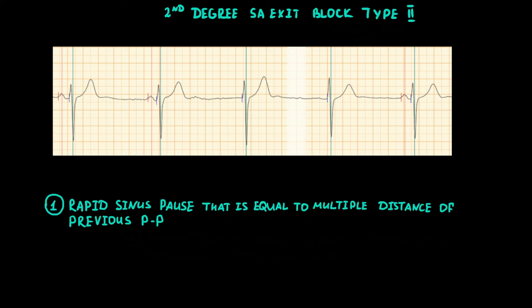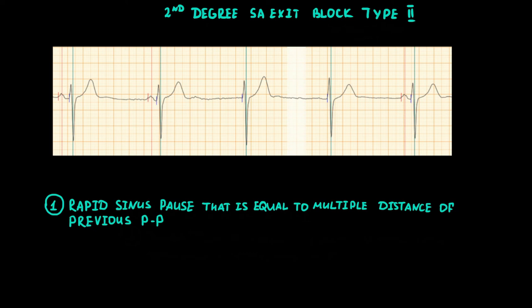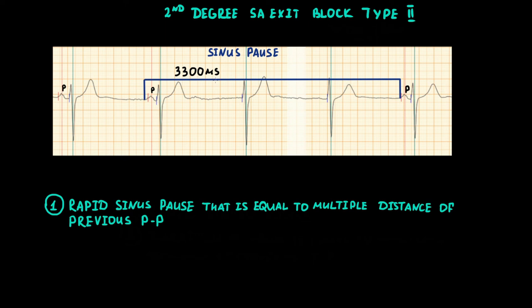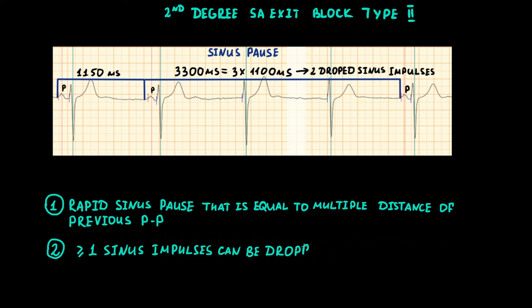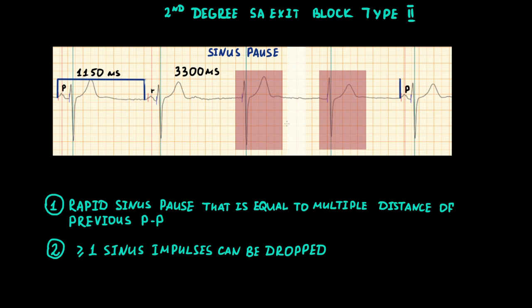Let's look at a real ECG example. We see the first two complexes with normal P-waves, followed by two complexes without P-waves, then P returns in the last complex — meaning in the middle of the strip there are no sinus complexes. The pause duration is 3300 ms; the previous PP interval is 1150 ms, so the pause is three times bigger, indicating two blocked sinus impulses. Also note the narrow QRS complexes without P-waves during the pause — these are escape AV nodal complexes arising as latent pacemaker activation during the sinus pause.